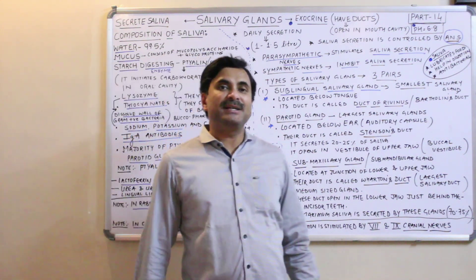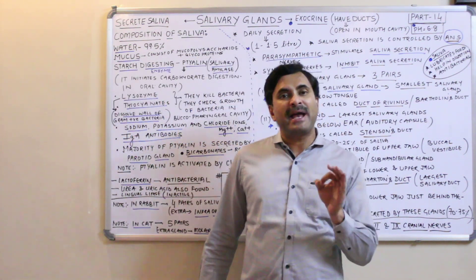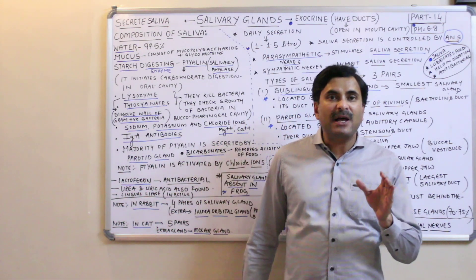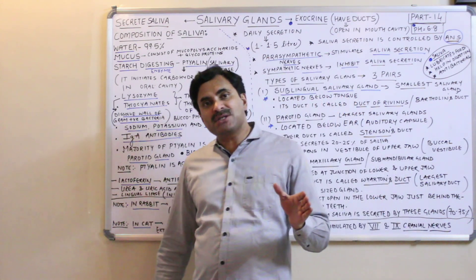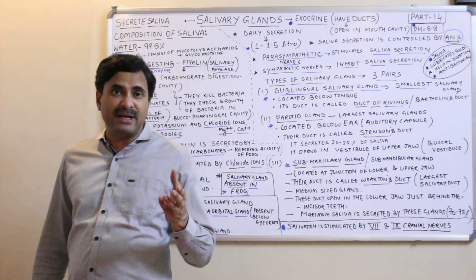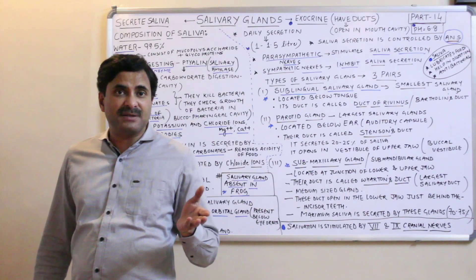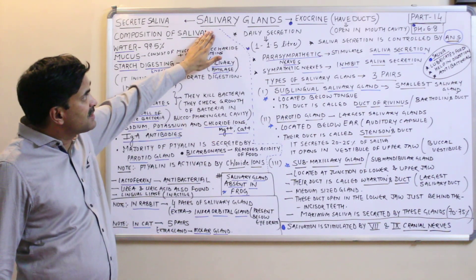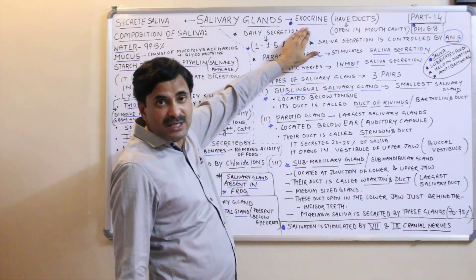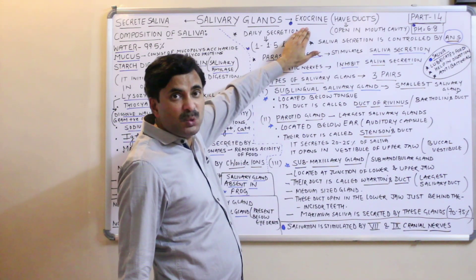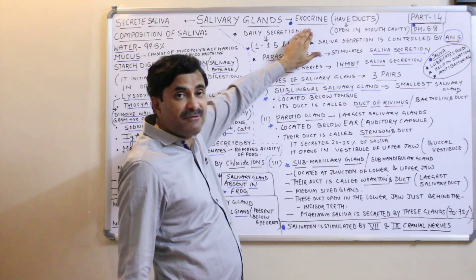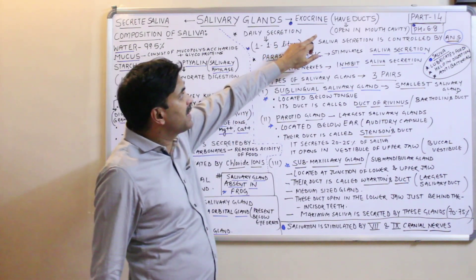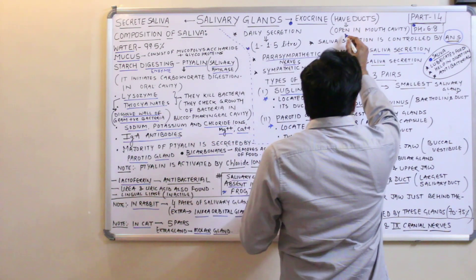Hello, today we are going to study about the salivary glands and the composition of the saliva. As you know, the digestive system equals the alimentary canal plus digestive glands. In this chapter, we discuss various types of glands: gastric glands, intestine glands, salivary glands, the liver, and the pancreas. These salivary glands are exocrine in nature — they have ducts that do not open into the blood but open outside, specifically into the buccal cavity.